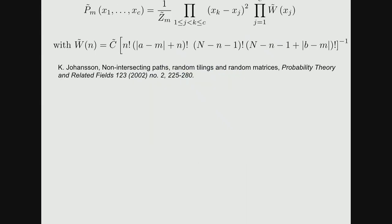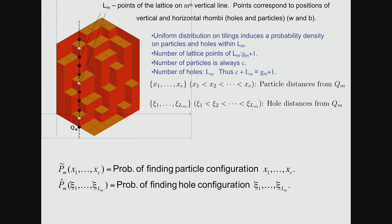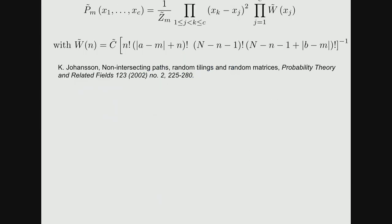A formula on the screen explains that the probability of finding particles at locations x_1 through x_c is given by an expression that is clearly a discrete orthogonal polynomial ensemble with a finite number of nodes growing as the hexagon size grows to infinity. The weight is classical — these polynomials are referred to as Hahn orthogonal polynomials.